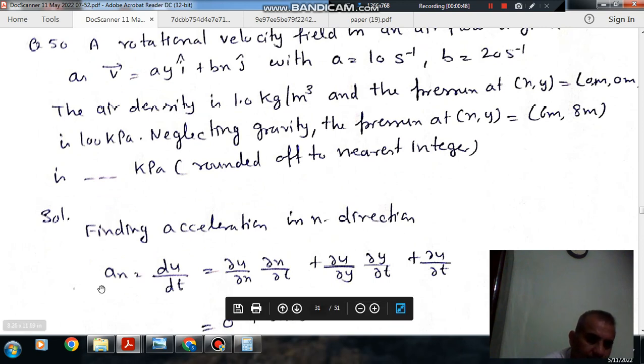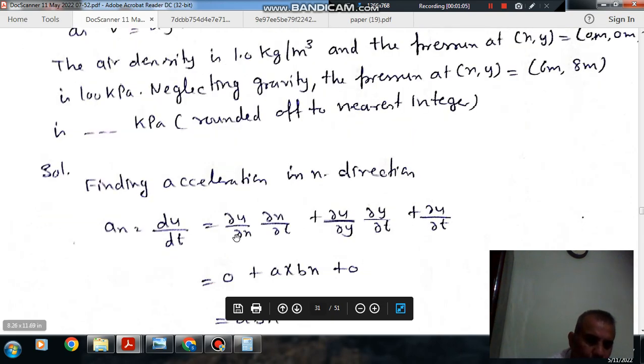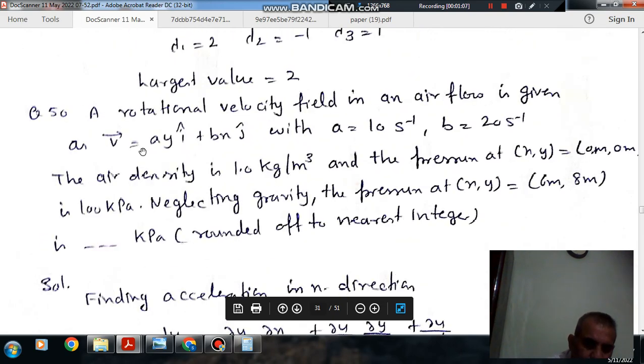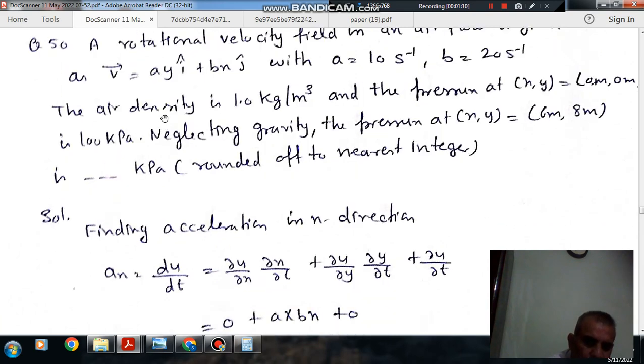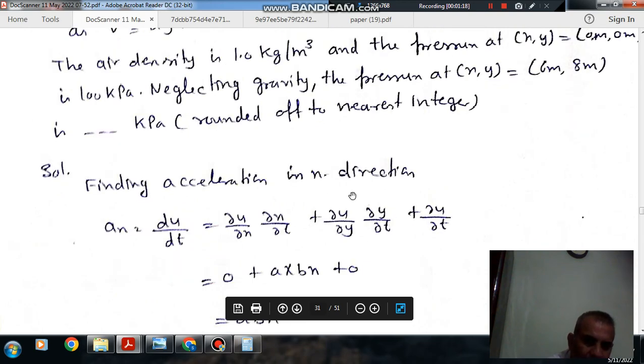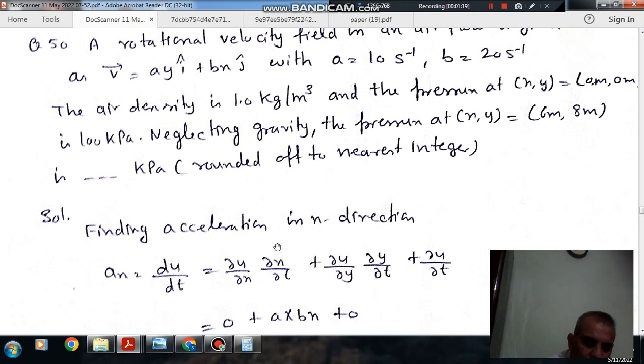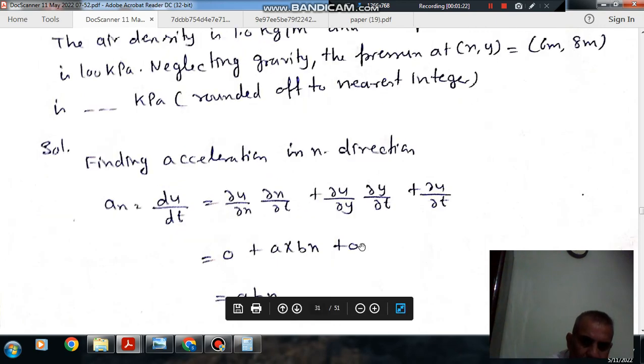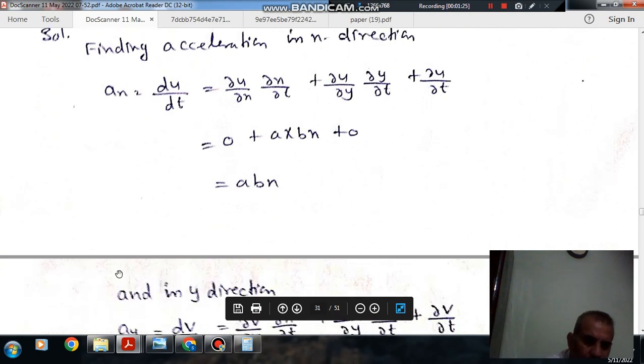Acceleration in X direction is Ax equals ∂U/∂t times ∂x/∂t plus ∂U/∂y times ∂y/∂t. Now, ∂U/∂x is zero because U equals AY has no X in it. ∂U/∂y is A, and ∂y/∂t is V which equals BX. So Ax equals ABX.